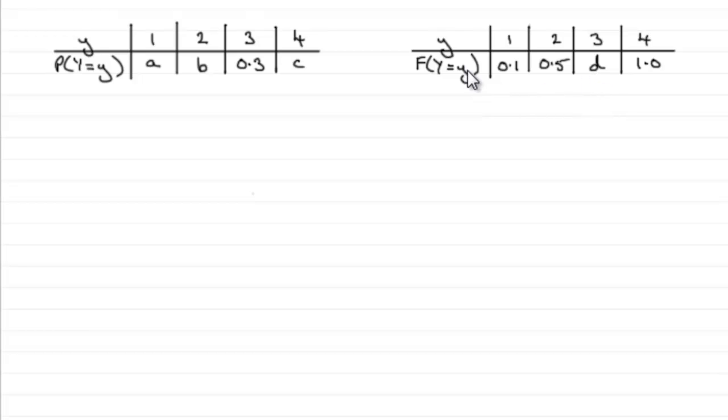So how do we do this? Well first of all, we've got to understand what the cumulative distribution actually represents. This capital F, we should know that it really represents, if we just write F(Y), it represents the probability that Y, a random variable Y, is less than or equal to any observed value Y.